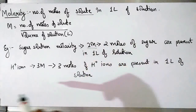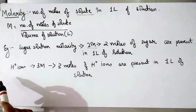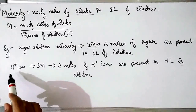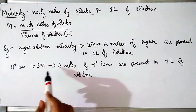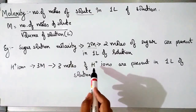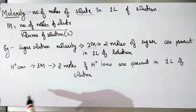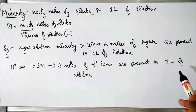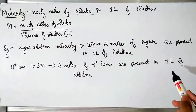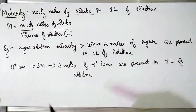If I say that the molarity of H⁺ ions in a solution is 3M, it means that 3 moles of H⁺ ions are present in one litre of solution. So that is what molarity is.